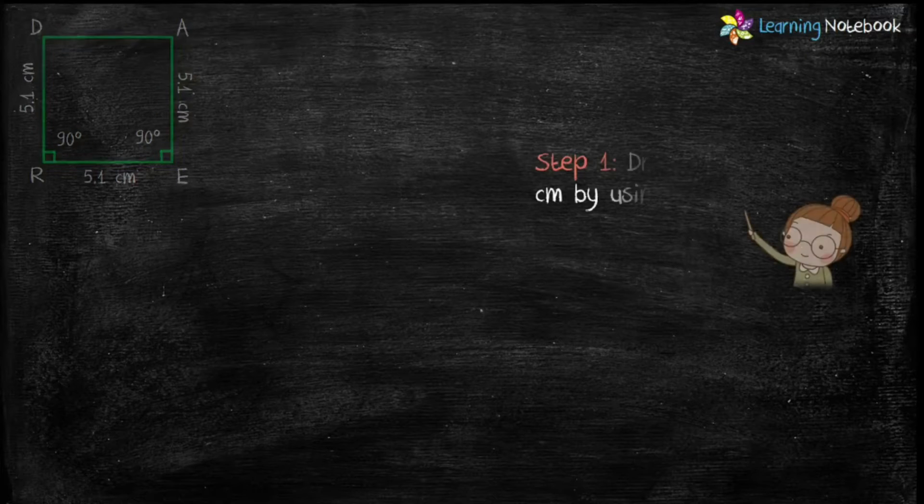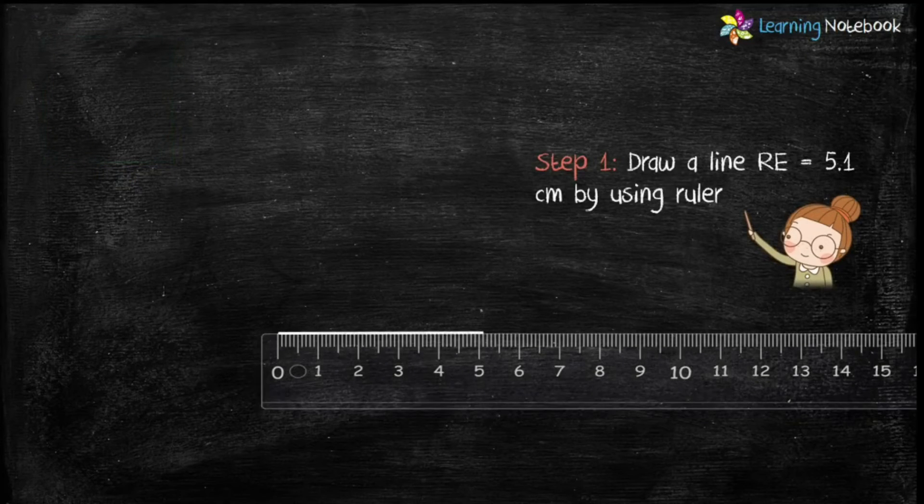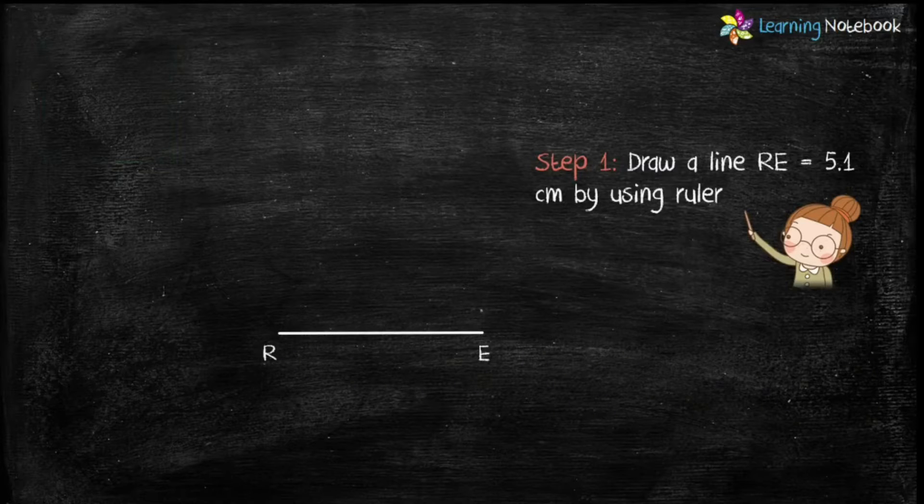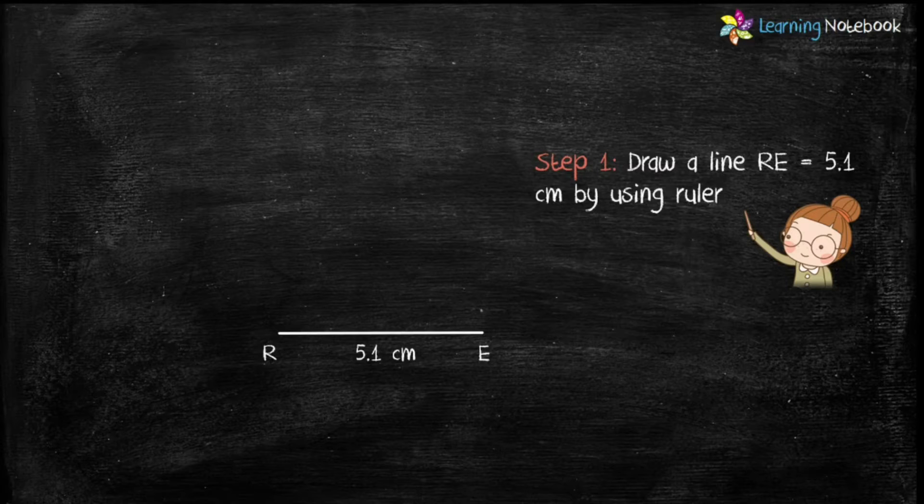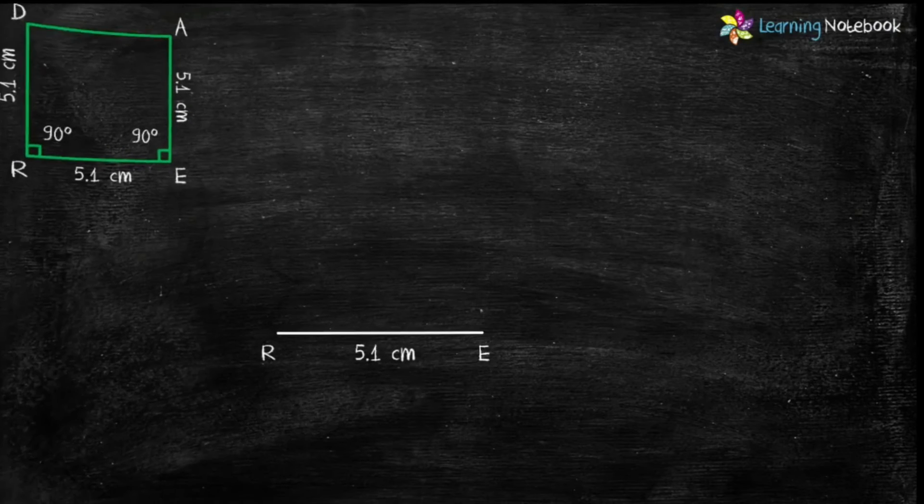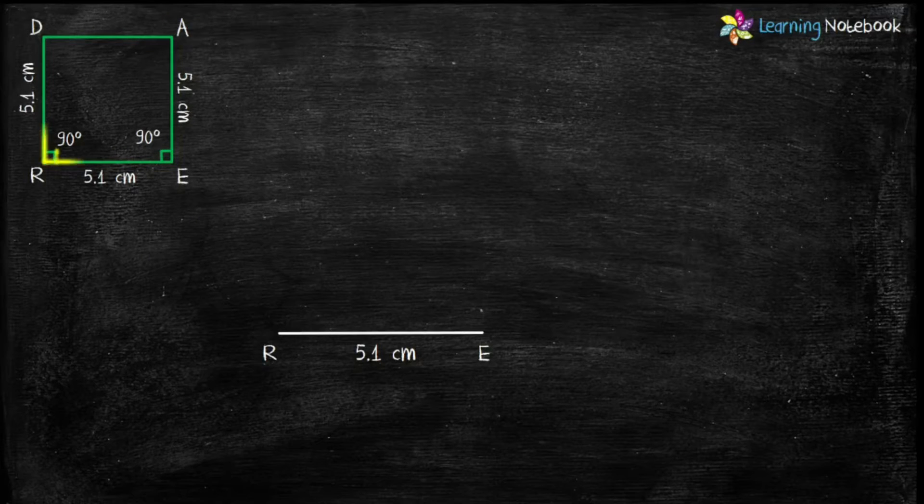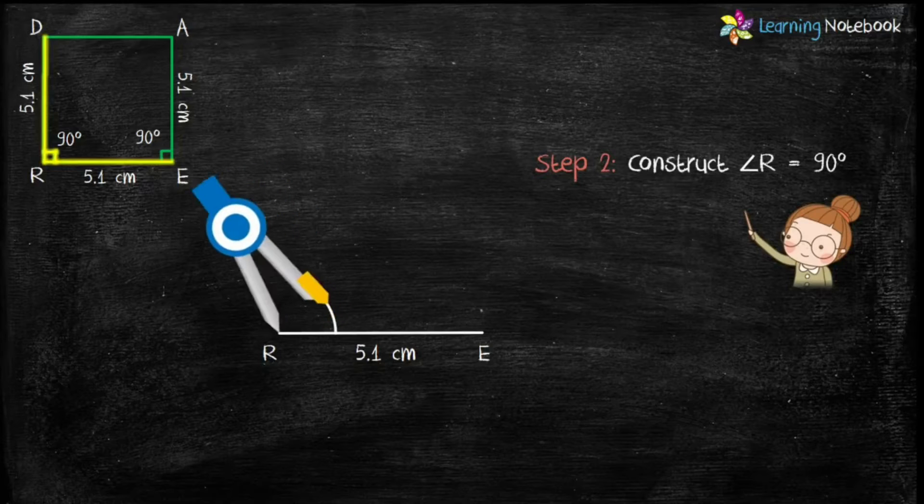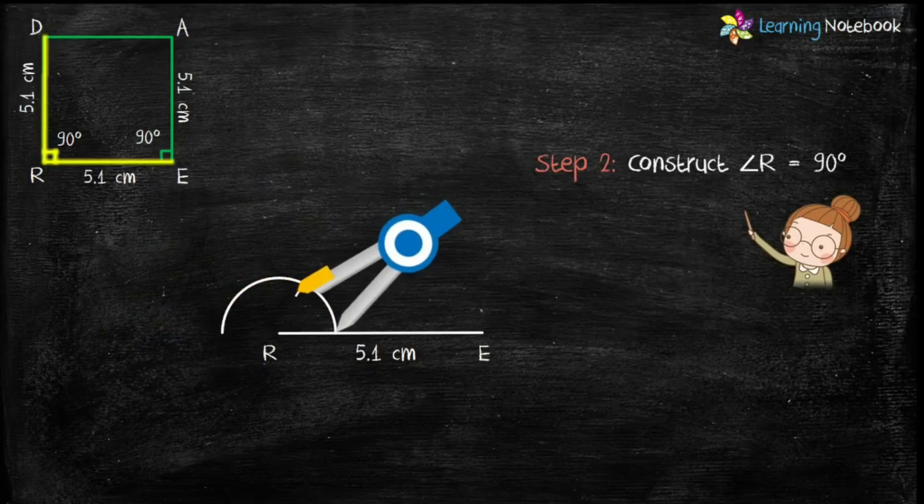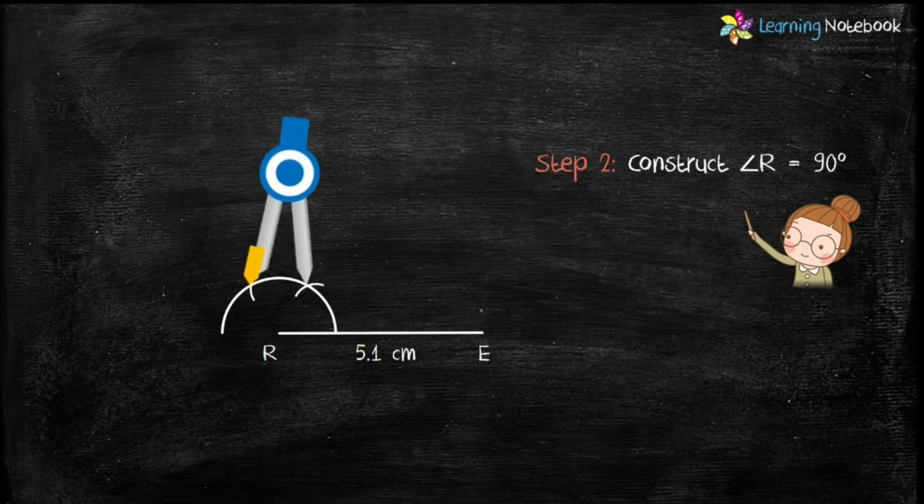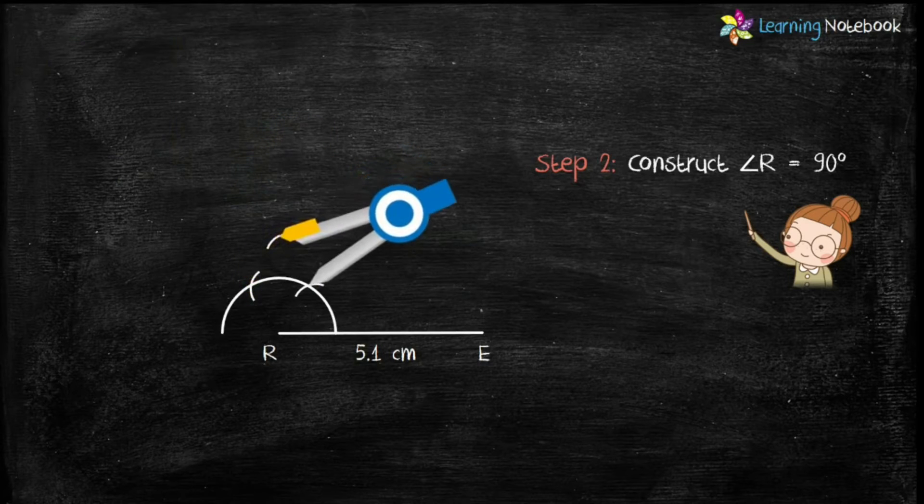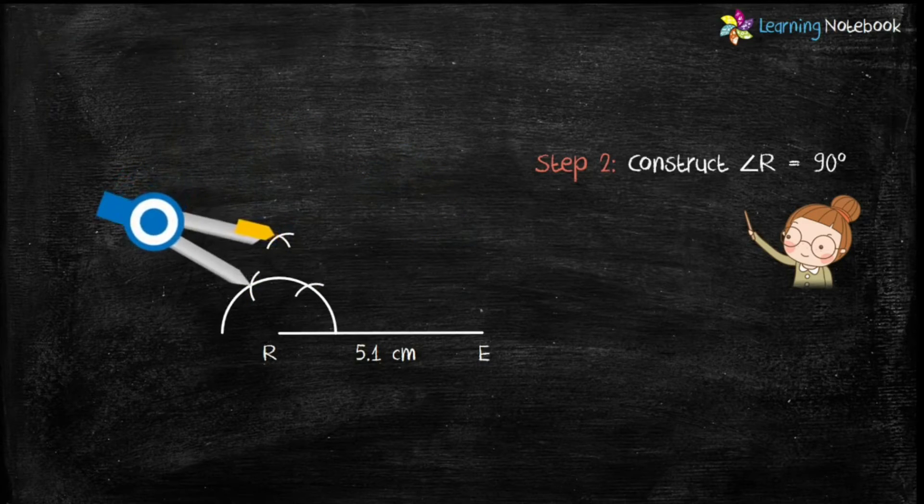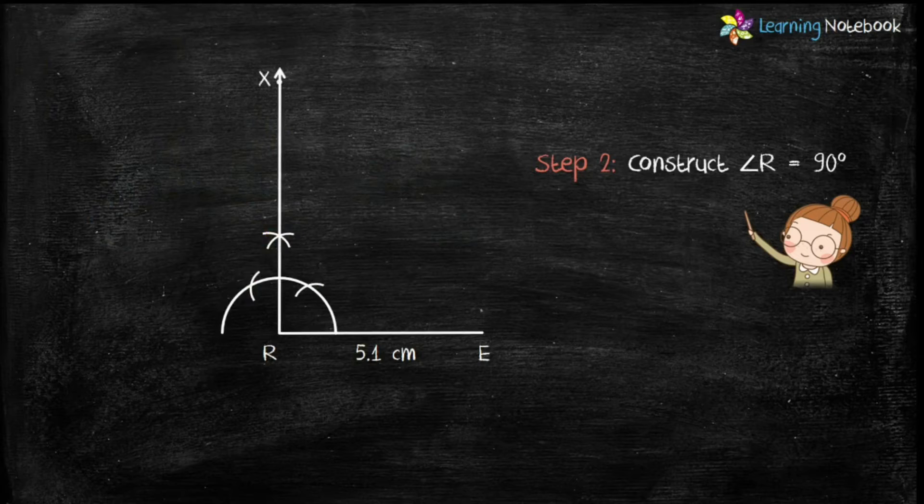Now let's start the construction by drawing line RE. So step 1 is, draw a line RE equals to 5.1 cm with the help of a ruler. Now look at the rough sketch. Let's draw angle R equals to 90 degrees in step 2. Students, you may refer to my separate video to learn step by step construction of angle 90 degrees.